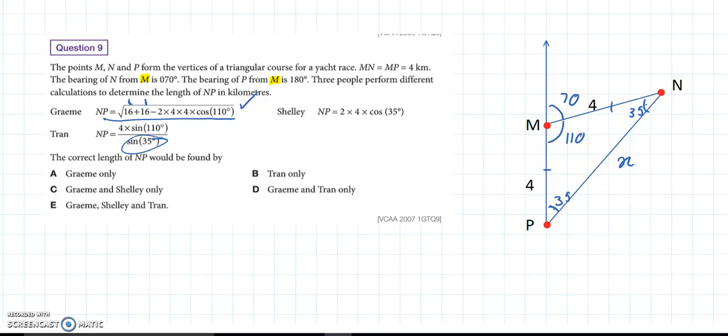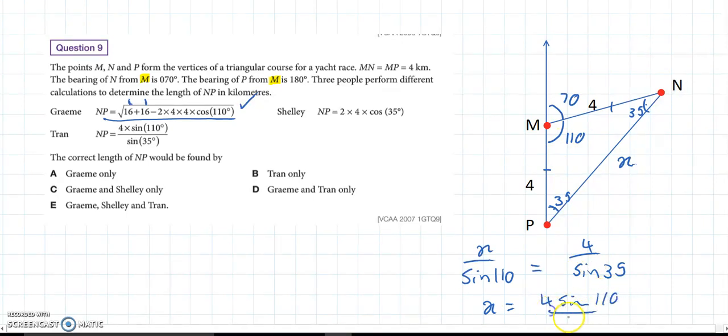That's probably where the 35 has come from. And then we can see the setup is sort of like sine rule. So, if I was finding x using sine rule, I would do x over sine of 110 equals 4 over sine 35. Because that's using opposite pairs. 4 over sine 35, x 110. x equals, sine 110 comes up. So, 4 sine 110 over sine 35. Which is exactly what Tran's written. So, we're liking Tran so far.